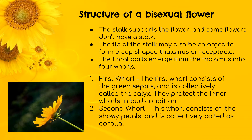Now let's look at the structure of a bisexual flower. The stalk supports the flower, and some flowers do not have a stalk. So in this figure, this will be the stalk of the flower. The tip of the stalk may also be enlarged to form a cup-shaped thalamus or a receptacle, as shown here. The floral parts emerge from the thalamus into four whorls.